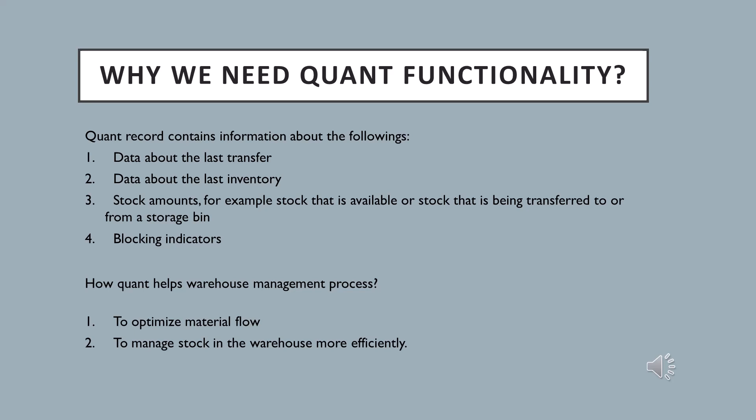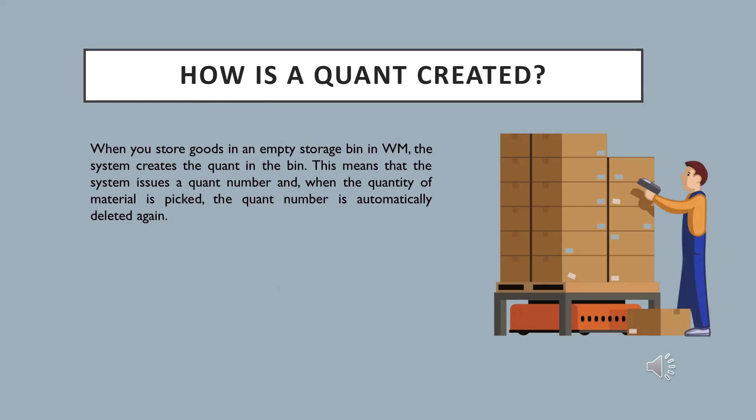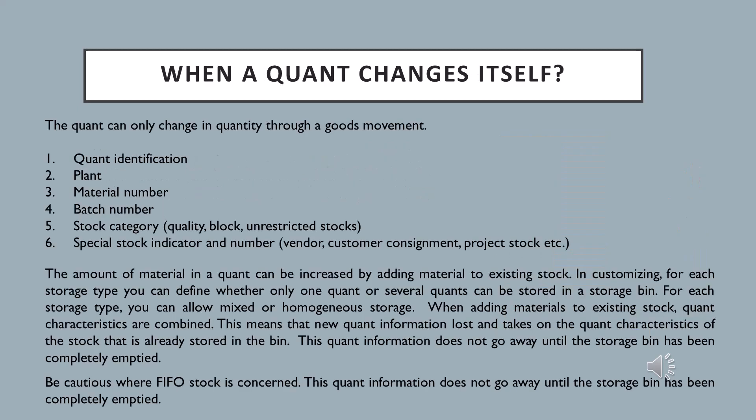The first question that comes to mind is how a quant is created — when is a quant created? Whenever we put away a material into a storage bin, the system creates a quant and assigns it to the quantity of material. And when we pick the material from the storage bin, the quant gets deleted. It is that simple.